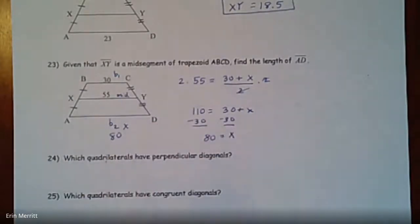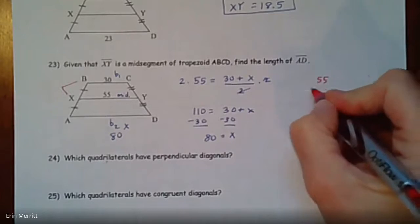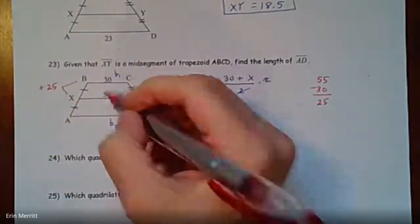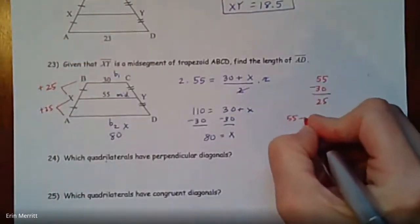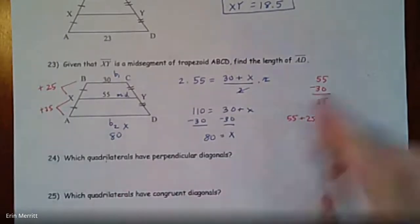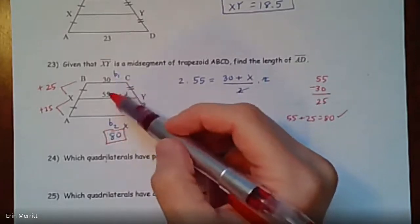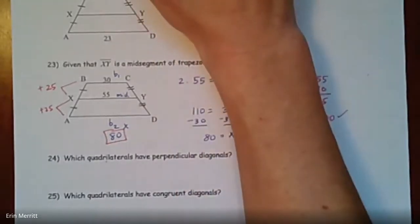Another way to check: the difference between the midsegment and base 1 is 55 − 30 = 25, so the other base should be 55 + 25 = 80. It should make sense that the midsegment value is between the two bases — it shouldn't get smaller or do something unexpected. Those are all the questions I'm covering in this review; if there are others, ask in class or reach out separately.